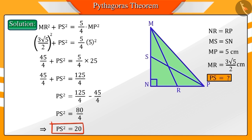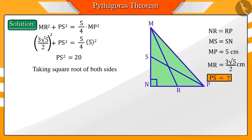We get PS square equal to 20. Taking square root of both sides, PS equals positive and negative 2 square root of 5.